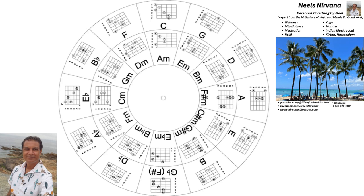Going to the circle of fifths, I'm sharing this diagram. If you look at the diagram, I'll explain what it depicts. There are concentric circles — an outer band and an inner band. The outer band is depicting major chords.